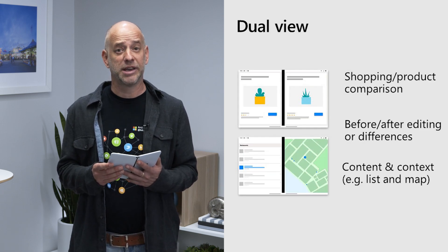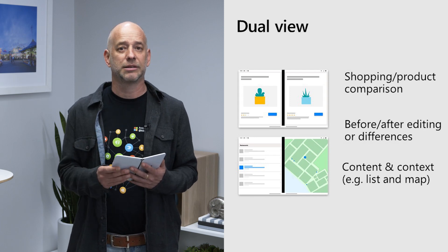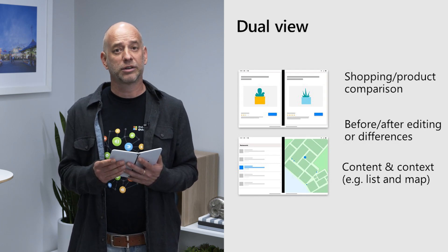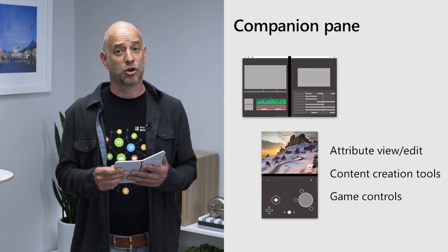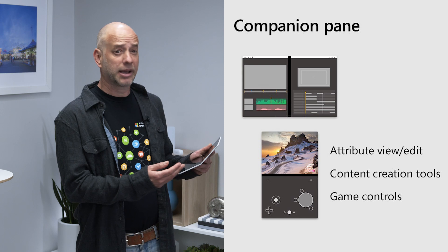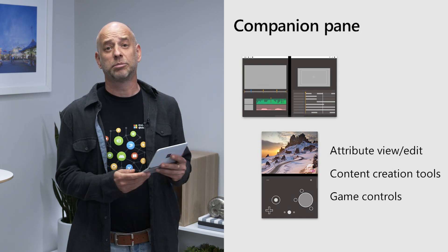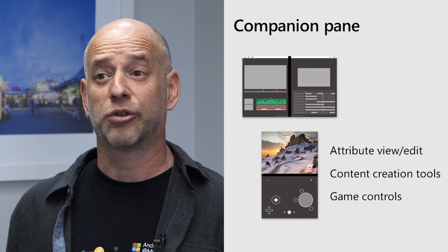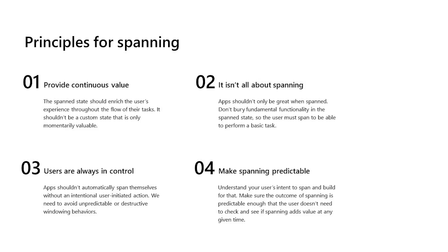Dual view provides ways to see the same content on two screens side by side. It can come in handy for comparison of content or for showing a before and after view. The companion pane is a view that can help control content on the other screen. For example, a gaming app can place the gaming controls in the bottom while the game is on the top. A video creation app can use the other pane for editing controls and additional settings. We've put together a few design guidance to help you make the right choices. Spanning should provide additional user value, but remember, the user is always in control, so your app should work great both on a single screen or when it's spanned. Make sure the transitions between single screen and span mode are predictable and make sense to the user and your app.